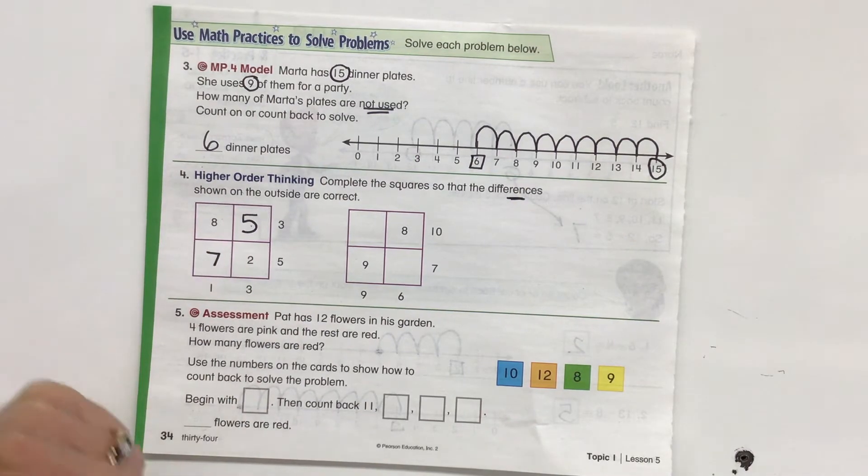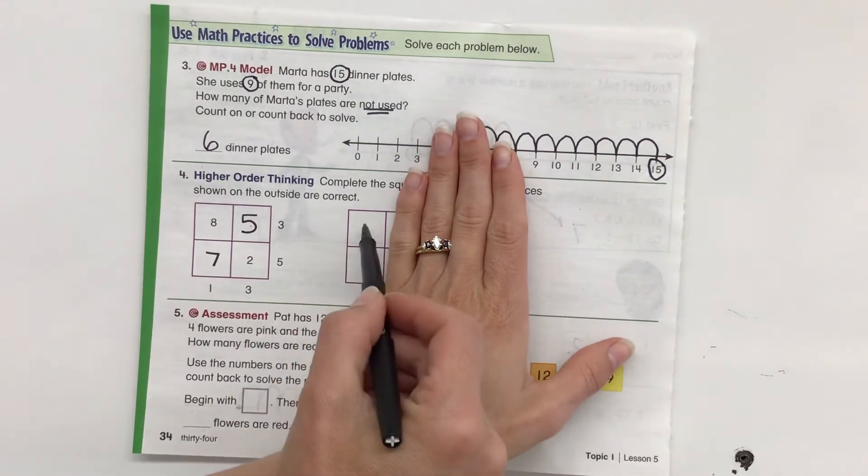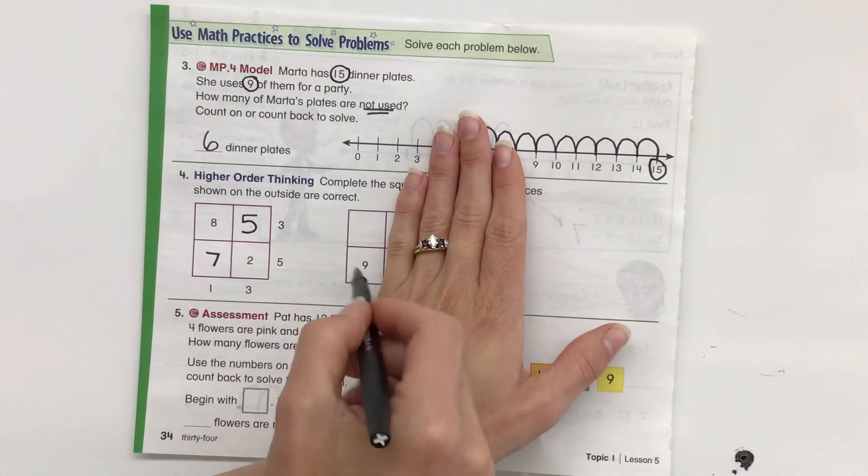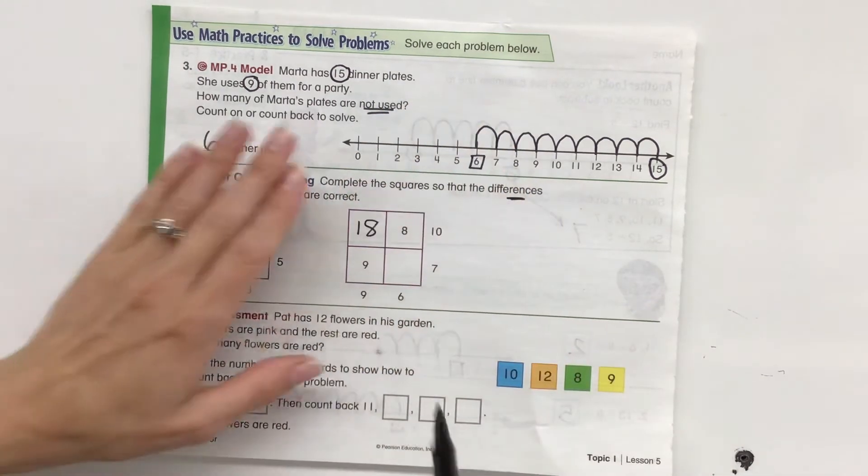Do you see the pattern, how it works? So this time I went across this way. I'm going to go up and down this way. Something minus 9 equals 9. So I can add up if I want to. 9 plus 9 equals 18. And 18 minus 9 equals 9.